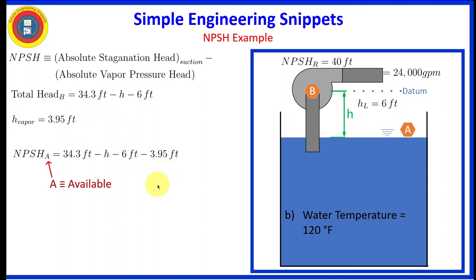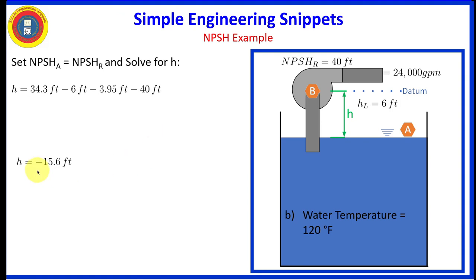We need to subtract from that the vapor pressure head. And when we do that, we set that equal to the required net positive suction head, which again is still 40 feet, and solve for H. And once again, we get H is equal to a negative, this time 15.6 feet. Again, the negative sign indicates that the pump location must be 15.6 feet below the surface of the water.